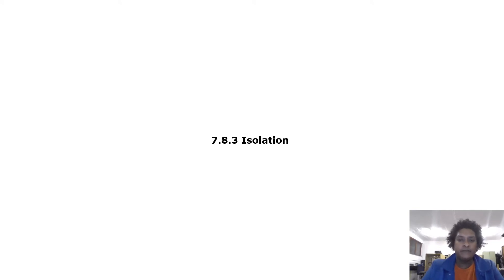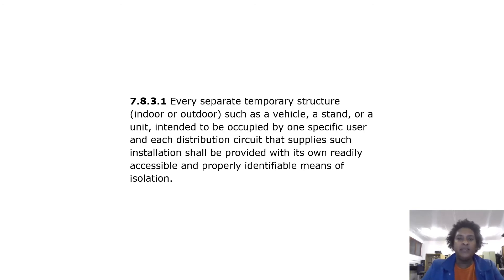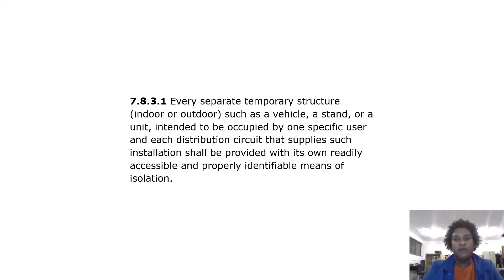Isolation: every separate temporary structure, indoor or outdoor, such as a vehicle, a stand, or a unit intended to be occupied by one specific user, and each distribution circuit that supplies such installations, shall be provided with its own readily accessible and properly identifiable means of isolation.